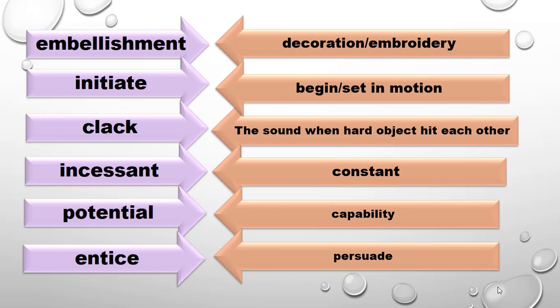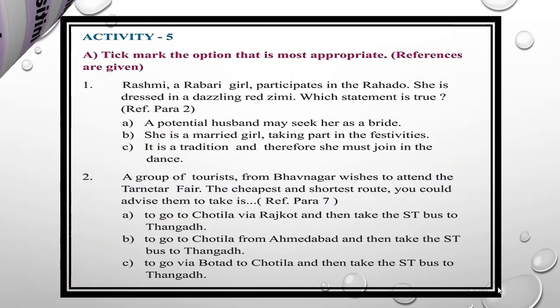Now let's move towards Activity 5. Let's read what is given: tick mark the option that is most appropriate. References are given — in each question, a paragraph number is referenced, so you have to find the answers from the paragraph mentioned in each question. Let's read the first question.